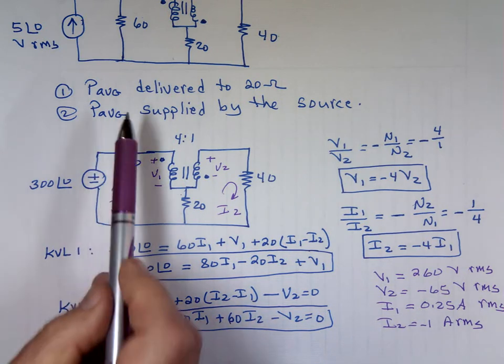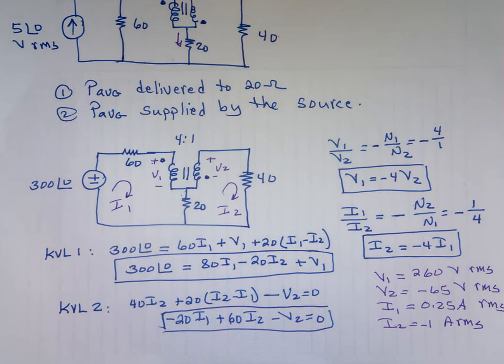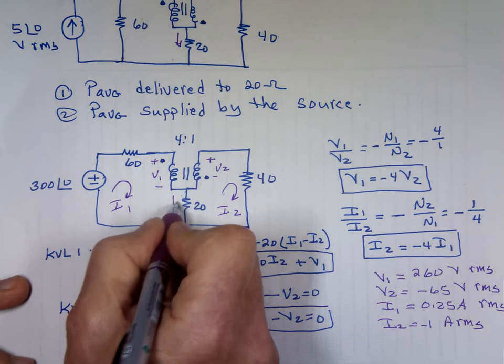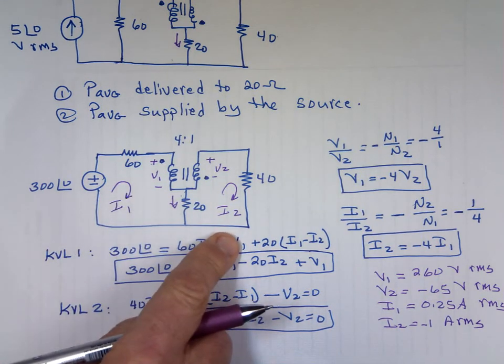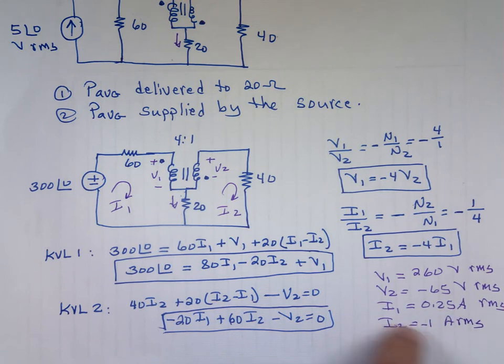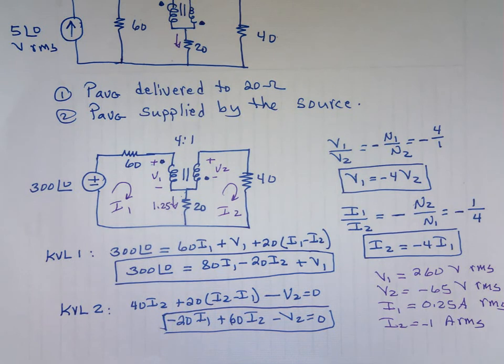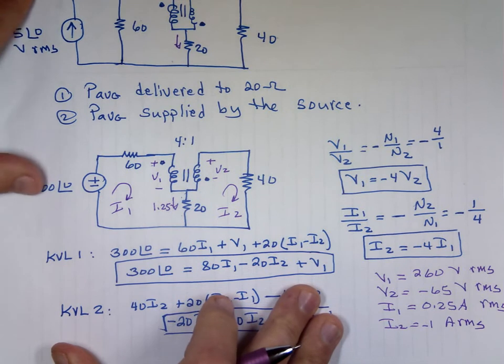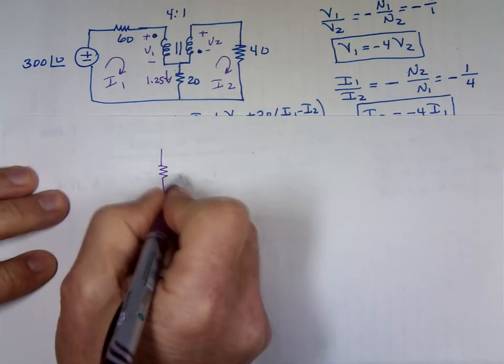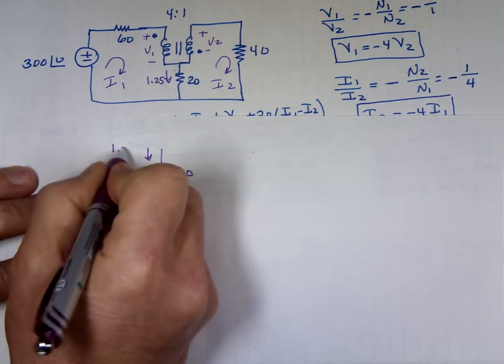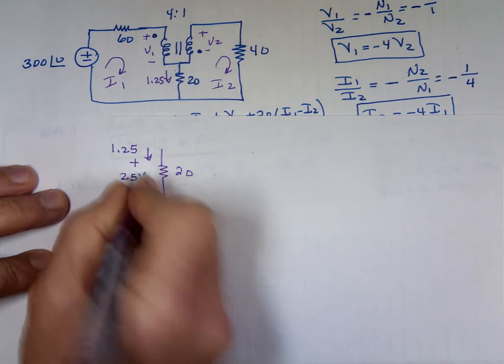If I want to find the average power delivered to that 20 ohm resistor, I need to know what is this current coming down through that resistor. Well, that current happens to be this current, and this current is I sub 1 minus I sub 2. I sub 1 is what? 0.25 minus a minus, that's a plus 1, so this is 1.25 amps. So here's what I know: I have that resistor of 20 ohms. I got a current coming down of 1.25 amps. I'm going to mark it plus to minus. Ohm's law says V equals I times R. That's 25 volts. So what's the average power?